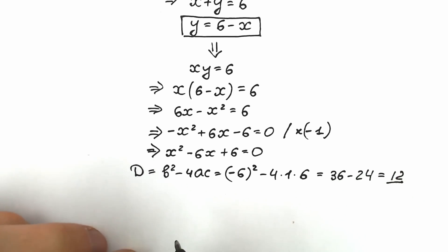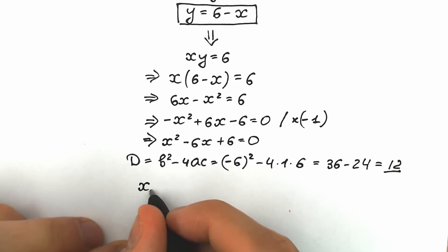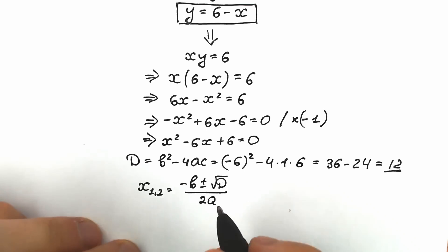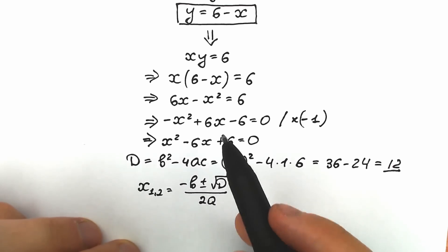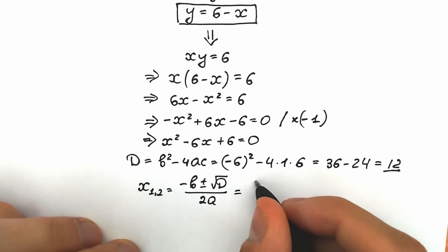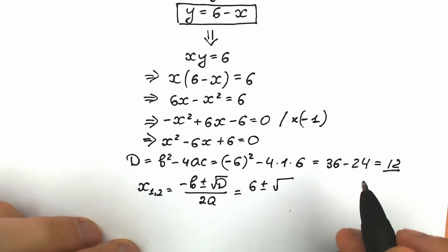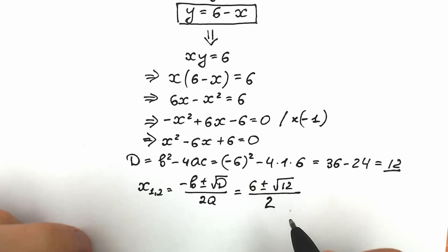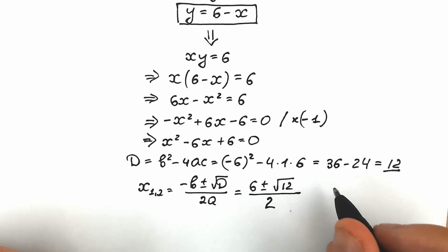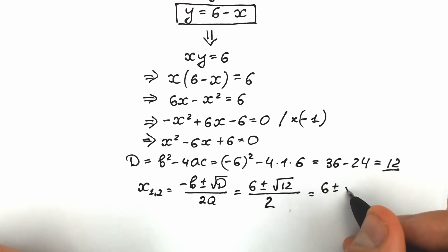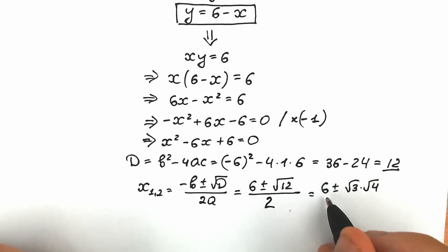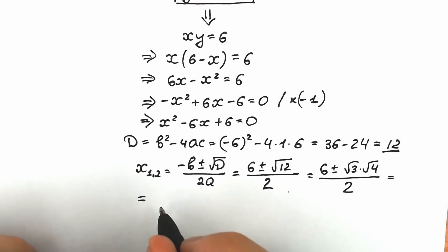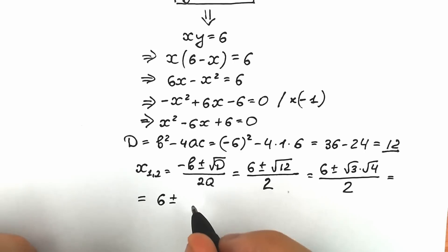We have real number roots, which is really great. So x₁ and x₂ equal minus b plus or minus the square root of the discriminant, all over 2a. Plugging in, we get 6 plus or minus the square root of 12, divided by 2. Let's simplify: square root of 12 equals square root of 3 times square root of 4.